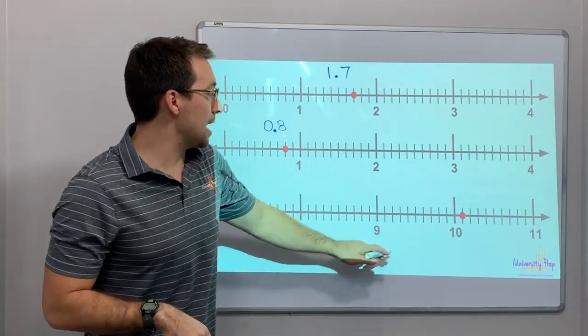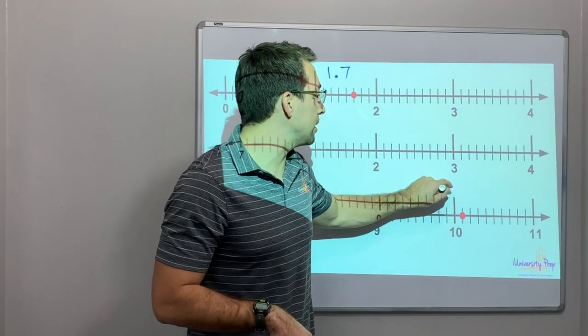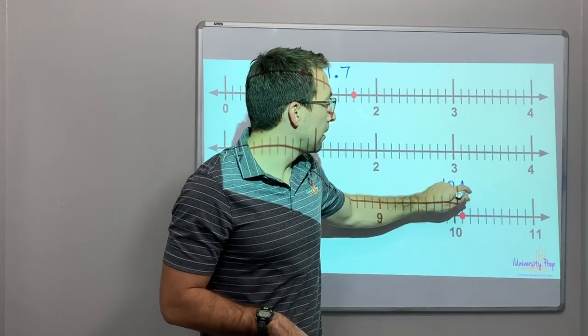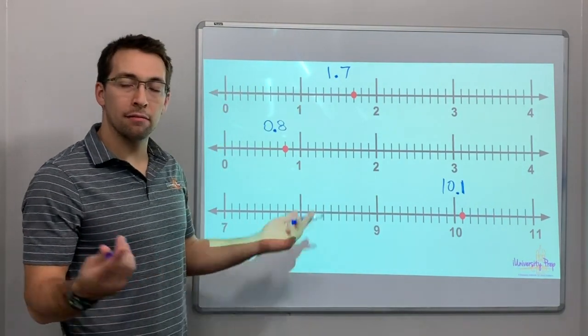7, 8, 9, 10. We're greater than 10. So 10 and 1 tenth. 10 and 1 tenth. There you go.